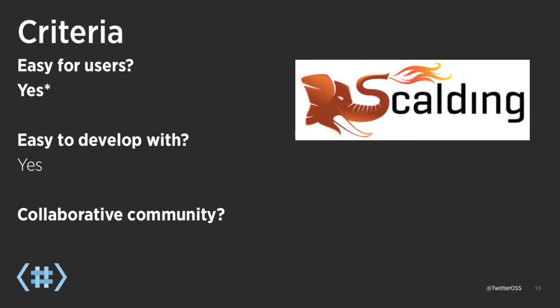Was it easy for us to develop with? Absolutely. We had prototyped our system on another library previously and found that, at its core, there were a bunch of nested implicit conversions that made it very difficult to debug when we had problems. Our Scalding prototype was really clear about what we needed to do — we need to provide the right sources — and we found it very easy to debug and interact with.